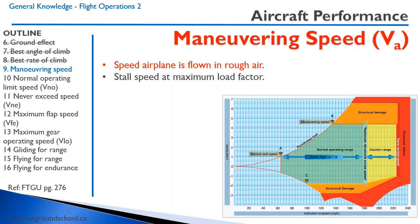The maneuvering speed is the speed at which the airplane is flown in rough air — by definition it is the stall speed at the maximum load factor. On this diagram, indicated airspeed is on the x-axis and load factor on the y-axis. At 1G the regular stall speed is 65 mph. As load factor increases, stall speed increases exponentially. For a utility category aircraft certified to 4.4G, the stall speed at that load factor — approximately 135 knots — becomes the maneuvering speed.